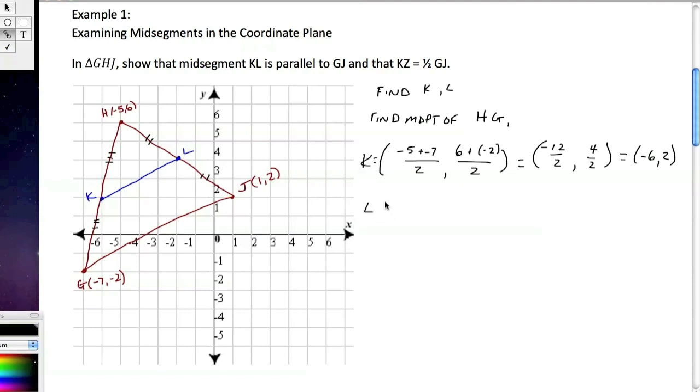Now we're going to find L. L is equal to negative 5 plus 1 over 2, comma, 6 plus 2 over 2, which gives us negative 4 over 2, comma, 8 over 2, which is equal to negative 2, comma, 4.